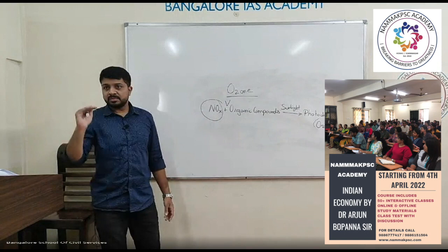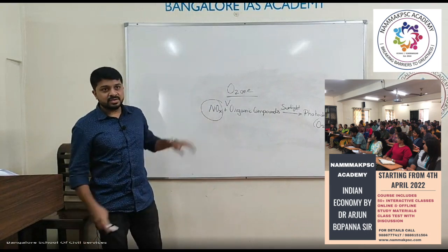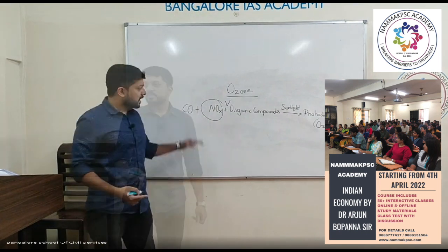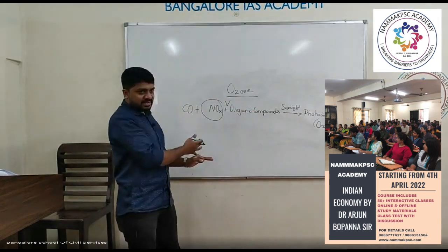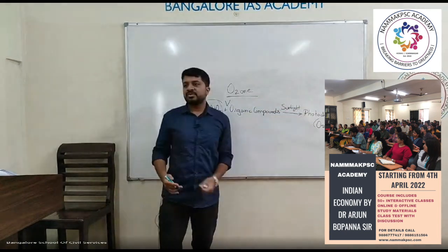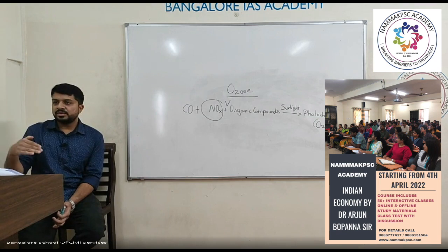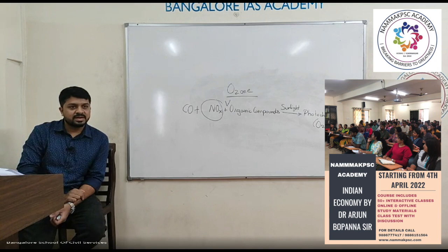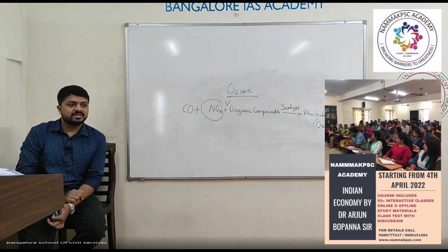Apart from oxides of nitrogen, carbon monoxide also plays a crucial role here. Carbon monoxide plus oxides of nitrogen plus organic compounds interact with each other in the presence of sunlight to produce photochemical smog. I have explained how it is produced, including the chemical reactions and the sources. Next, we will see what effect it has on health.